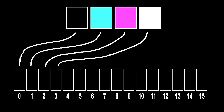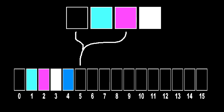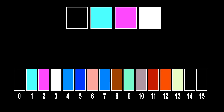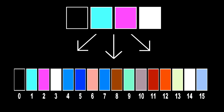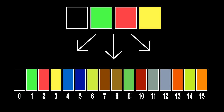You start off with your 4 ugly primary colors. But if you mix black and cyan, you get blue. If you mix black and magenta, you get dark blue, and so on. So these 4 primary colors are used to create 16. You can change the primary palette to one of the other ones and get a whole different set of colors — so you can have 16 colors on screen at once out of a palette of about 64 colors to choose from.